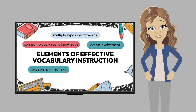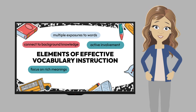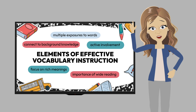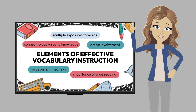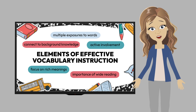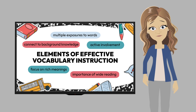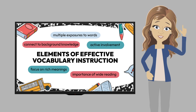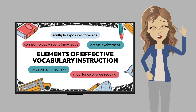The last effective element we talked about was the importance of wide reading. We must provide lots of opportunities throughout the school day for kids to read, and we must encourage this wide reading to extend into the home. This wide reading should include reading a variety of texts for general exposure to words, and also reading of a single topic to deepen their understanding of a word.